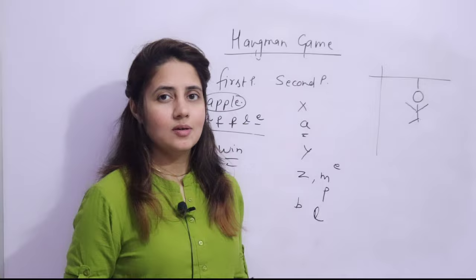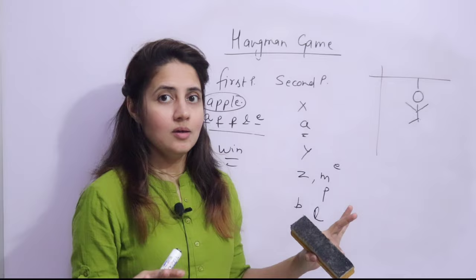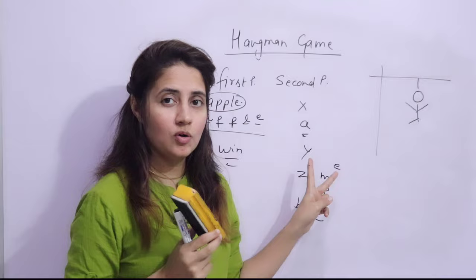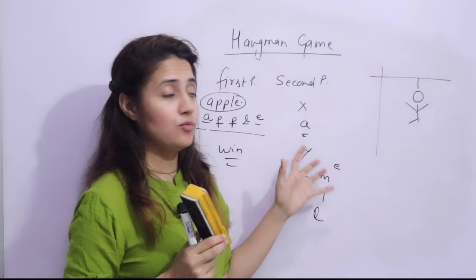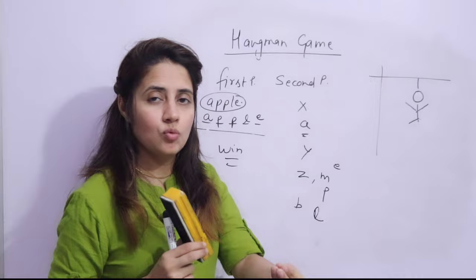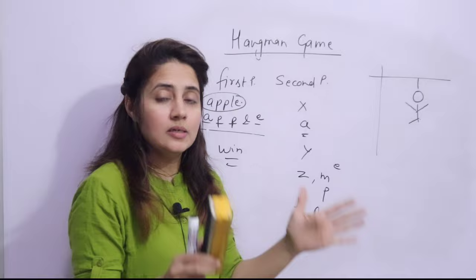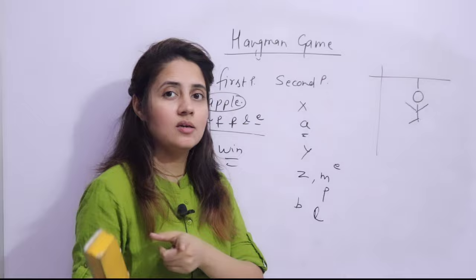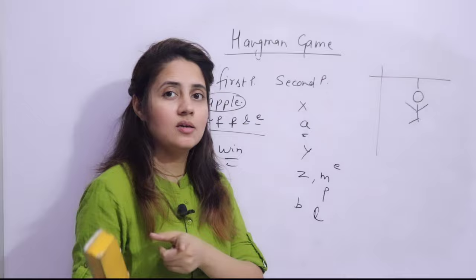Now you have the idea of what the hangman game is and how to play it. The second part of this project is creating a flowchart first, because this is a complex problem and we need to divide it into smaller tasks. You can write an algorithm and draw a flowchart to better understand the problem. Try to draw the flowchart first, then start writing the program. In the next video we'll be drawing the flowchart. See you in the next video - bye bye, thank you.